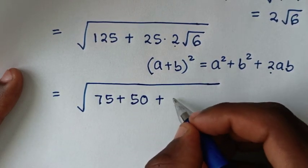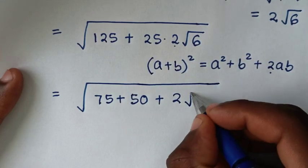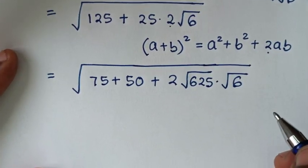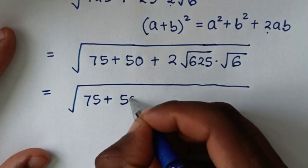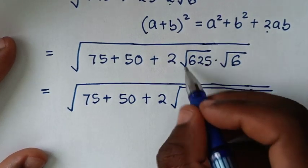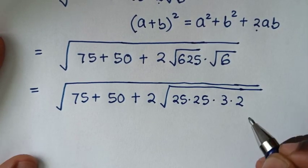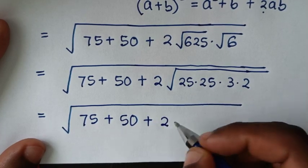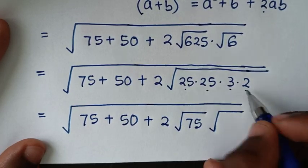So it will be equal to square root of (75 plus 50) plus 2 times, where 25 can be expressed as square root of 625, times square root of 6. Expanding further: 625 equals 25 times 25, and 6 equals 3 times 2, giving square root of (75 plus 50) plus 2 times square root of (25 times 3) times square root of (25 times 2), which simplifies to square root of 75 and square root of 50.